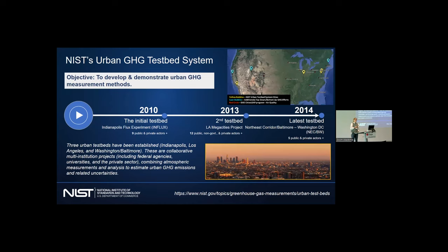Our urban testbed system was started in 2010. I think we're lucky to have a couple of founders here, Kevin Gurney, and more importantly, Ken Davis. That started around Indianapolis and is commonly referred to as the InFlex project. Then we moved in 2013 to LA where we established the LA Megacities project. And then in 2014, we went to the Northeast and established a testbed focused on the Washington D.C., Baltimore, Maryland cities.